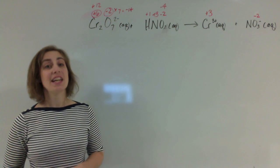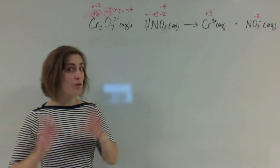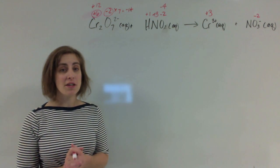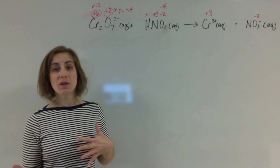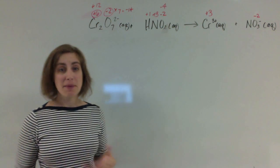That just leaves us with the nitrogen for the nitrate ion. Simple enough, we've got 3 negative 2's with an overall charge of negative 1. So 3 times 2 is negative 6, which means we need a positive 5 to balance that out.